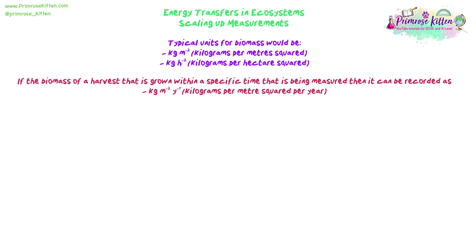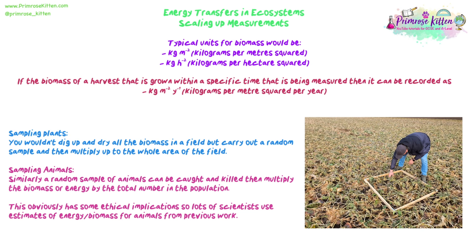A farmer won't destroy his whole crop to figure this out, so we do sampling. You carry out a random sample using a technique like a quadrat, sampling a few metres squared, digging up a small amount of plants, measuring the biomass or energy from that sample, then multiplying up to the whole field area. For animals, you catch a random sample from a known area, estimate the population, measure biomass or energy from the sample, and multiply up by the total population in that ecosystem.